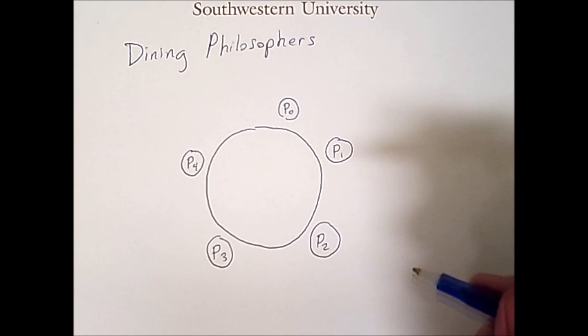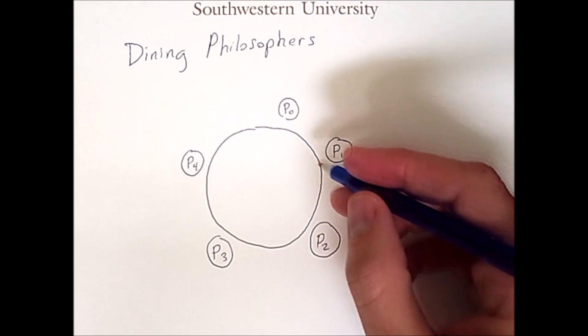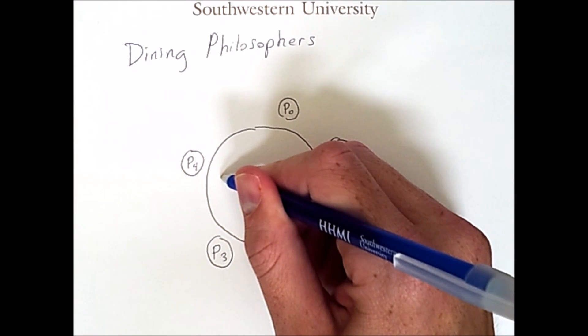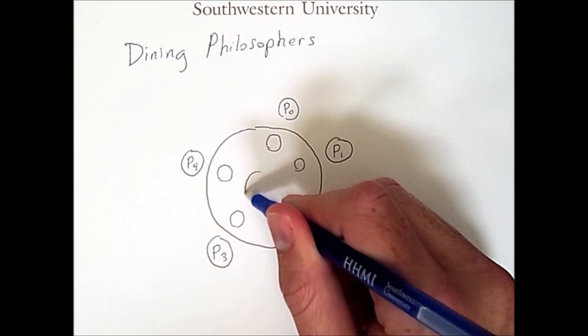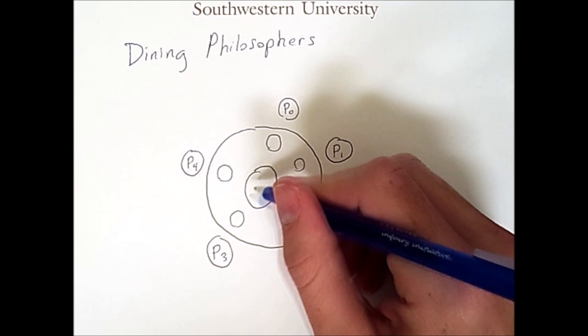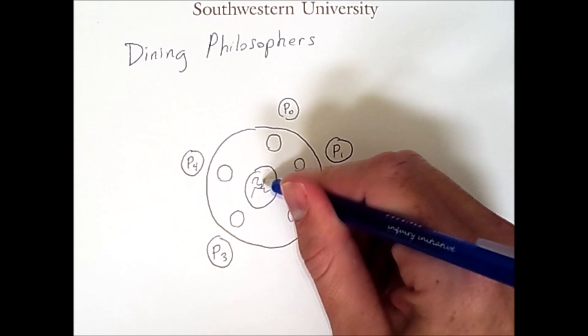A philosopher's life is spent alternating between periods of contemplation and periods of eating. They need sustenance every once in a while. So in front of each of these philosophers is a plate, and in the center of the table they get an infinite supply of spaghetti, which I'll represent with these squiggly lines.